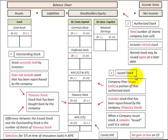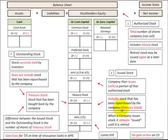Now the issued stock is where the company can issue or sell any portion of this authorized stock. That includes the stock that has been repurchased by the company — that would include our Treasury stock. So our issued stock includes our Treasury stock.